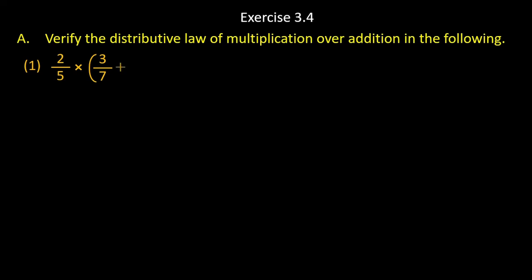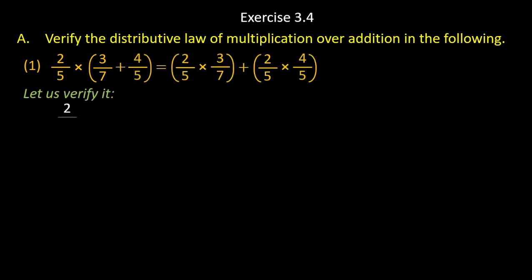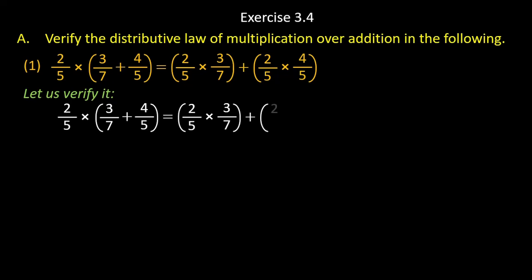It is very simple. First of all we will solve the bracket. In the bracket we have 3 upon 4 plus 4 upon 5, and on the other side 2 upon 5 into 3 upon 7 plus 2 upon 5 into 4 upon 5. So leave 2 upon 5 the same; inside the bracket we have 3 upon 7 plus 4 upon 5.